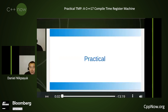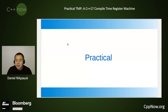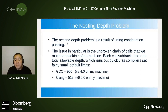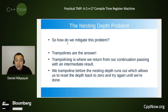We're back, continuing on with the practical bottlenecks, starting with the nesting depth problem. The nesting depth problem is a result of using continuation passing. The issue is the unbroken chain of calls from machine to machine, where each call subtracts from the total allowable depth, which runs out quickly as compilers set fairly small default limits — GCC version 8.4 on my machine has a limit of 900, Clang version 6 is 512. The answer is trampolining: we return from our continuation passing with an intermediate result, trampoline before the nesting depth runs out, which resets the depth back to zero and tries again until we're done.